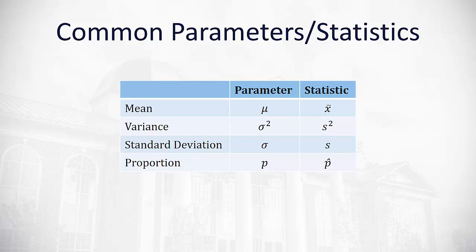Statistics generally, we use lowercase English letters. So for the mean, the statistic would be x-bar. The variance, s squared. The standard deviation, s. And the proportion, p-hat.